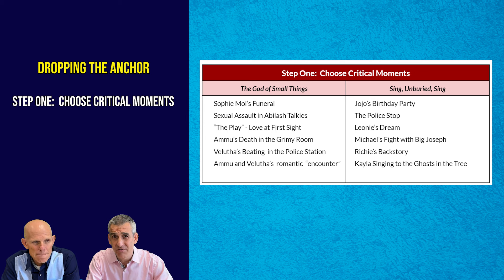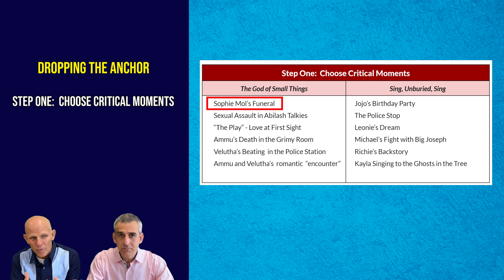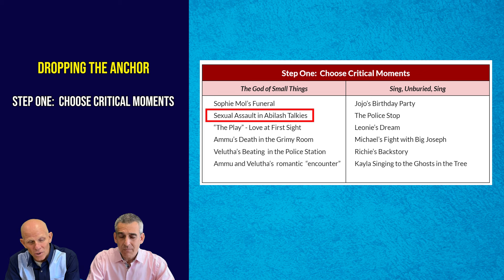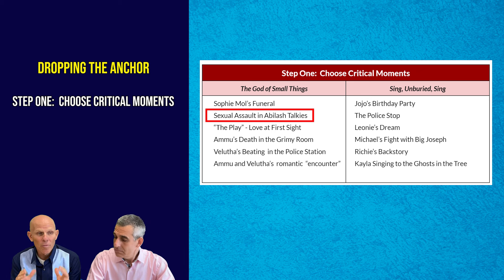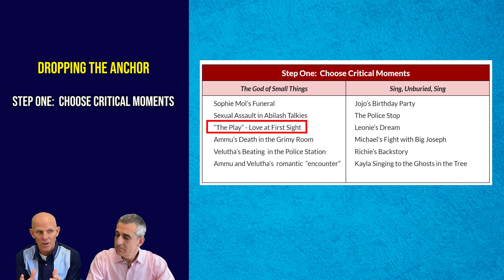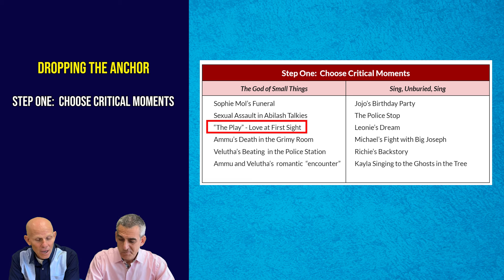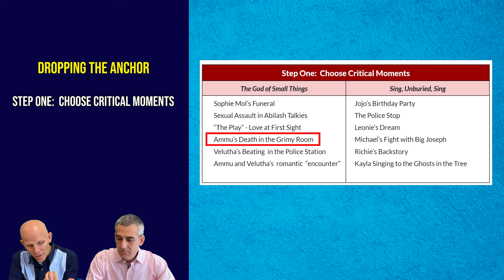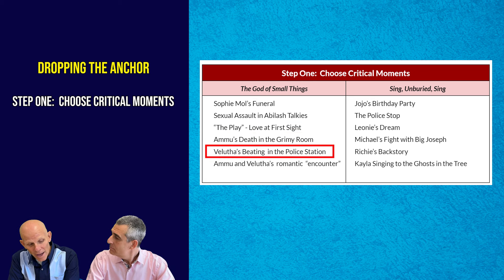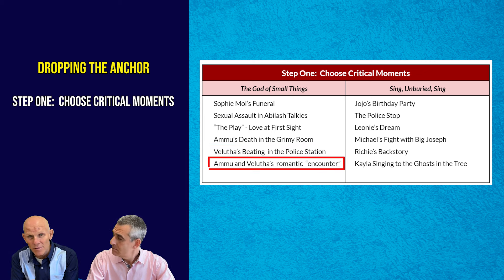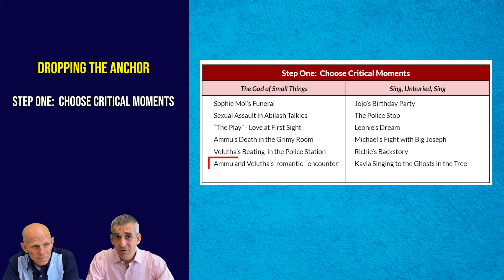For The God of Small Things by Arundhati Roy, a post-colonial Indian novel, we think about Sophie Mol's funeral in the opening of the text, a moment of sexual assault in a movie theater and how that affected Estha, a moment when two characters fall in love for the first time, a character who dies alone in a grimy room, a police station scene where a man is beaten highlighting the caste system and its unfairness, and lastly the romance between Ammu and Velutha as they come together. All the key themes are found in those hot spots.